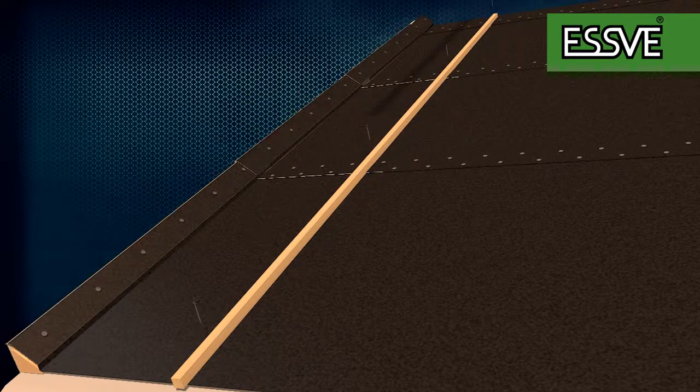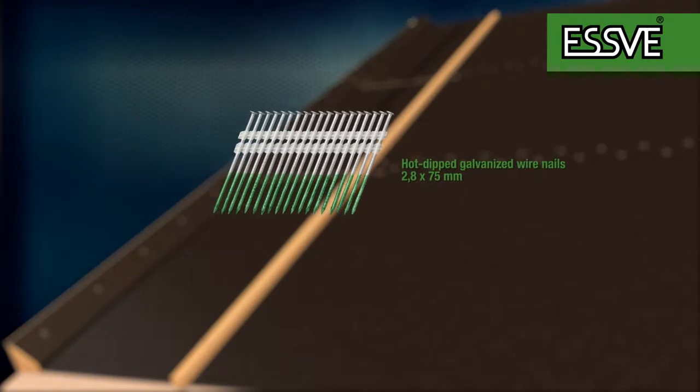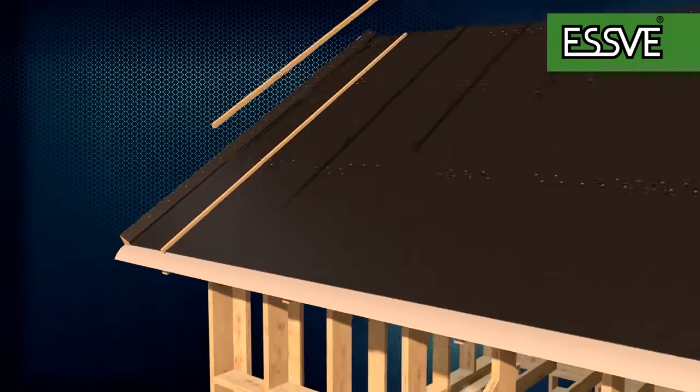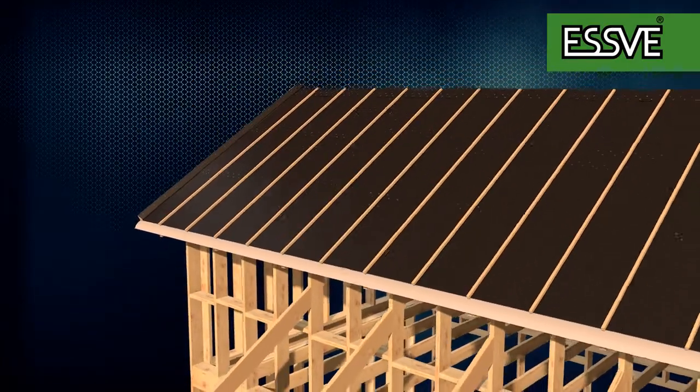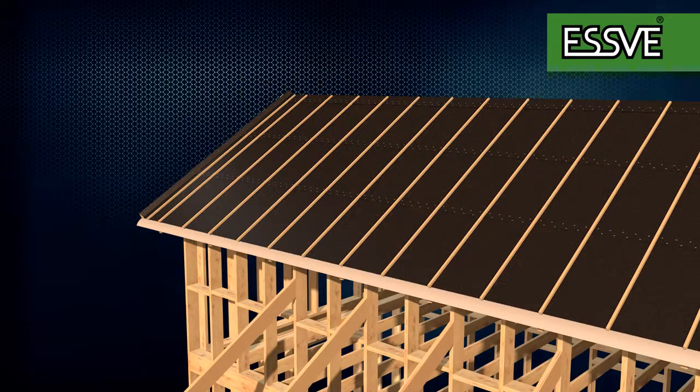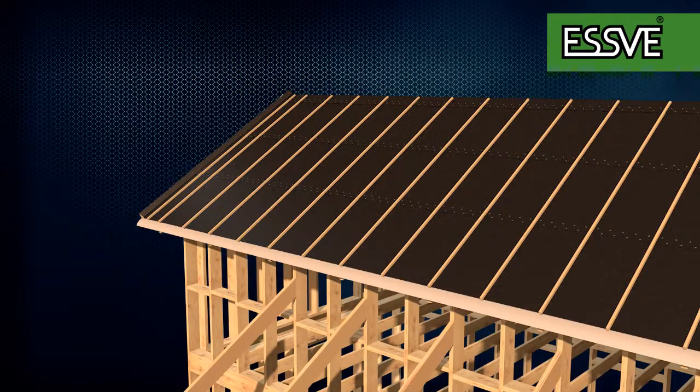Secure the counter battens using hot-dipped galvanized wire nails 2.8 by 75 millimeters, one on each truss and one in between to produce center spacing of 60 centimeters. Also position a counter batten 10 centimeters in from the gable.